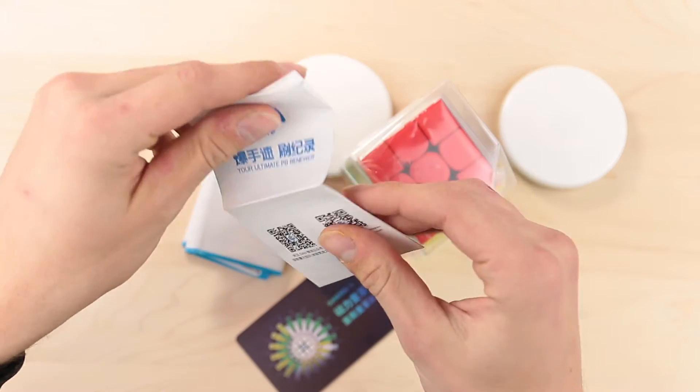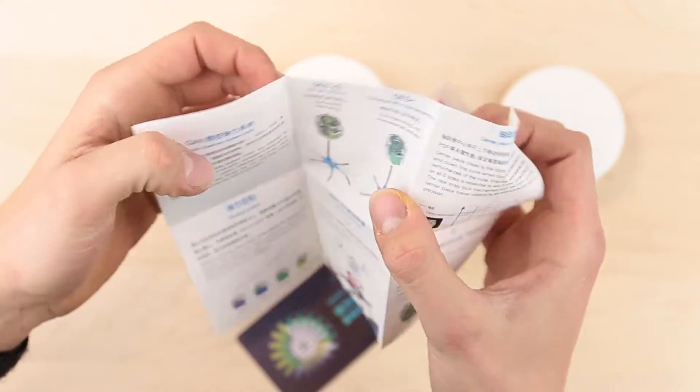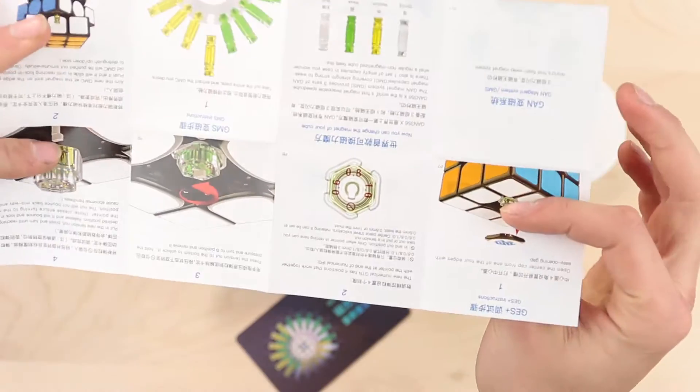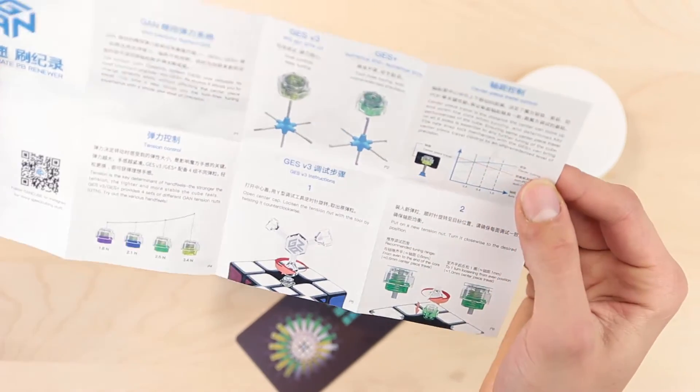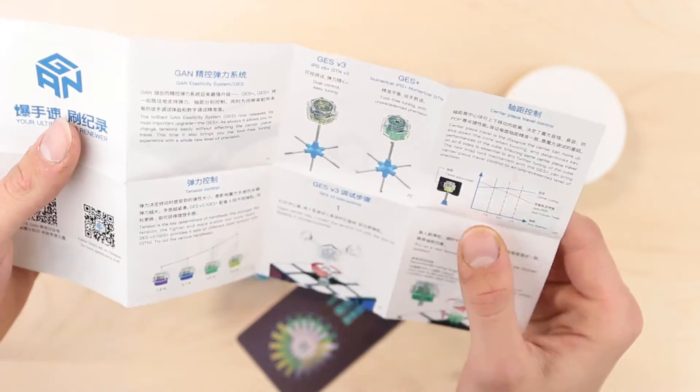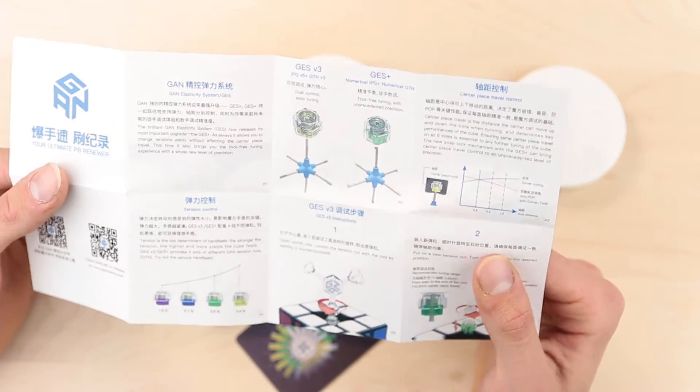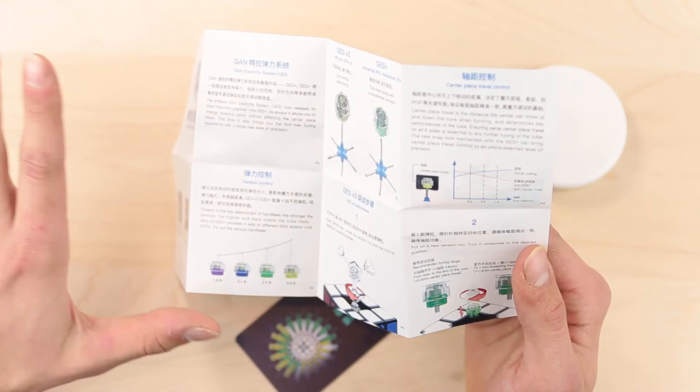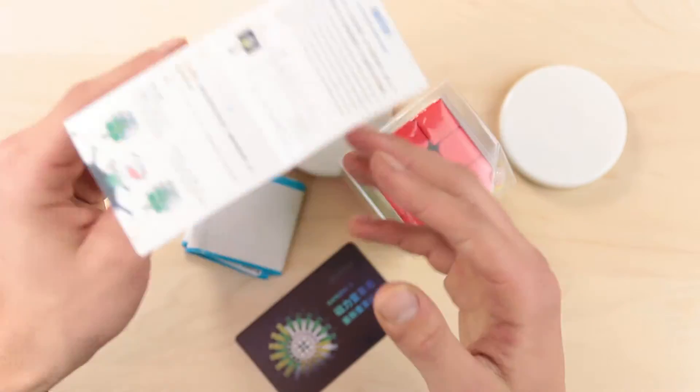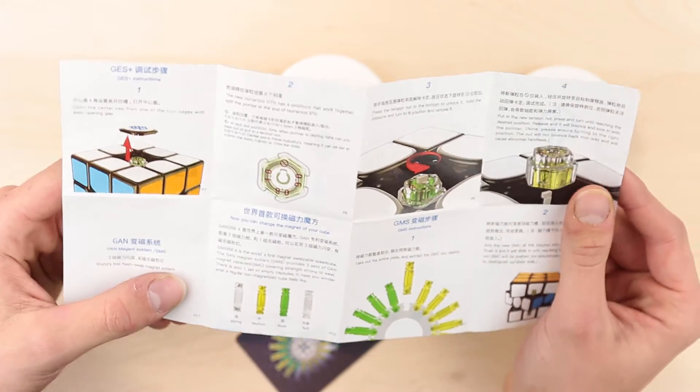Alright, so we have a pamphlet here which talks about the GES V3. That's good, it talks about the GES V3. That was one of the complaints I had with the 354M, was that it talked about the GES V2, which was obviously part of the SM, and things like that, and this didn't apply to that.